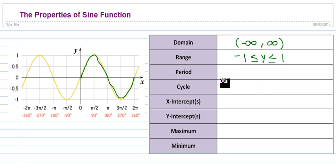So our cycle goes from 0 to 2 pi. That's one complete cycle. And the amount of time that it takes to go from 0 to 2 pi is 2 pi.